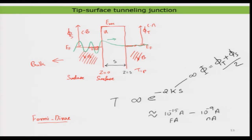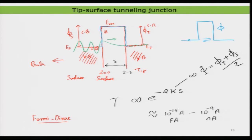Now we have directly created a barrier between the tip and the surface. This looks almost like the previous case — the barrier has been defined. The electrons here want to move in either direction and the barrier height is defined by the work function of the material itself. If you take two different materials, you end up with a slightly trapezoidal type of barrier where psi_s and psi_t are not equal.